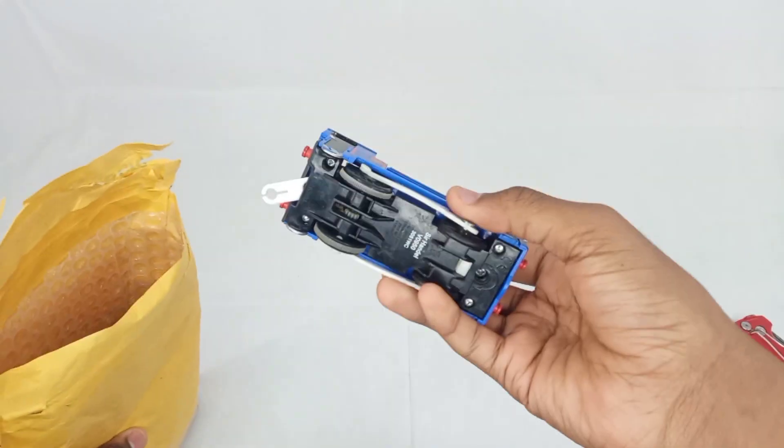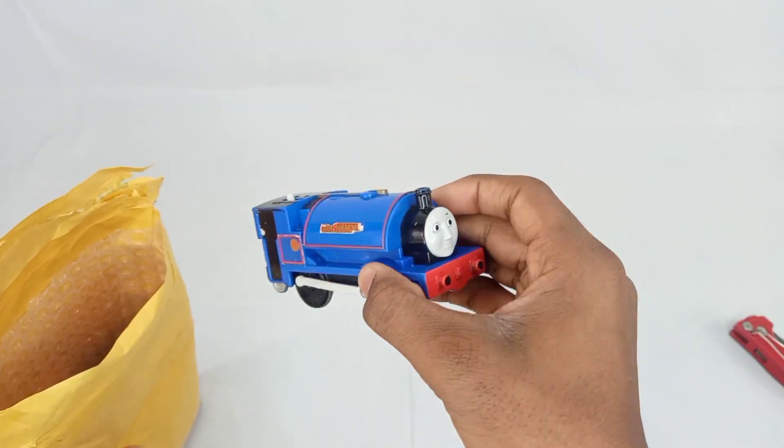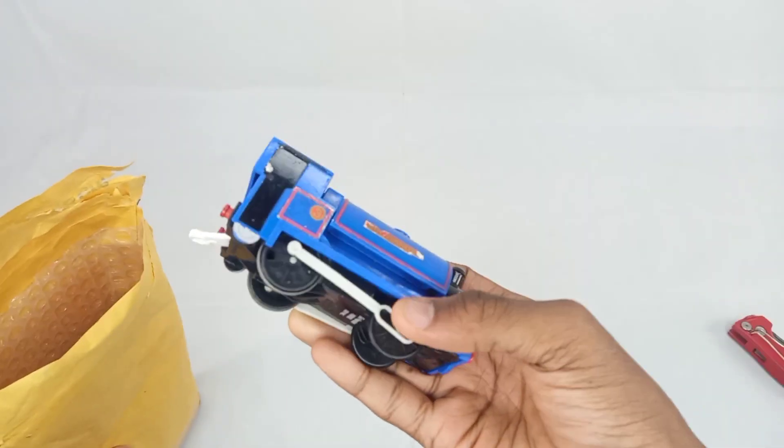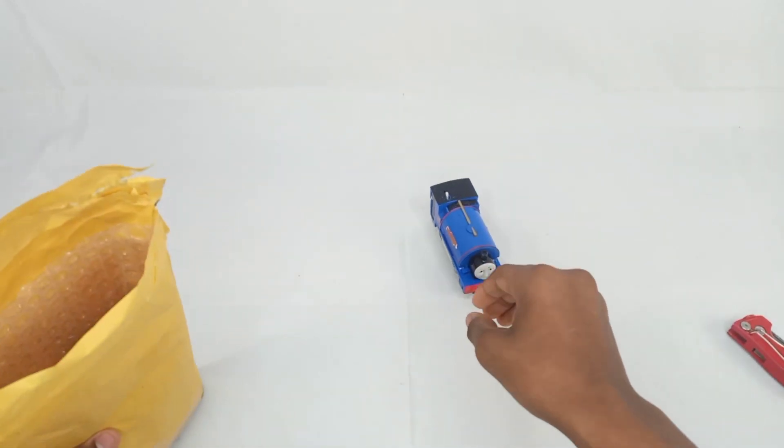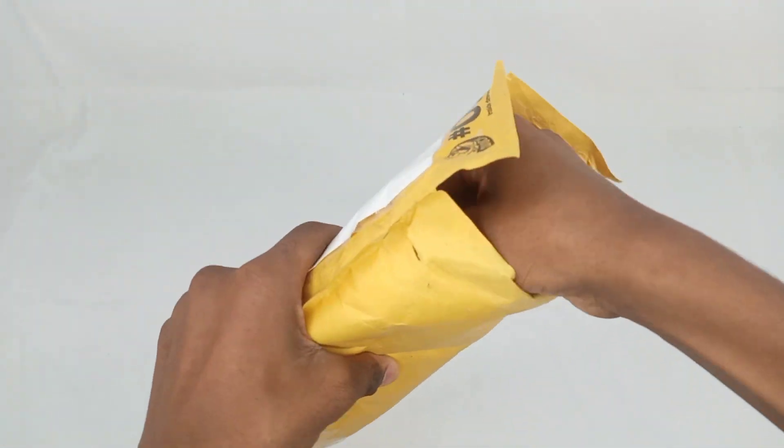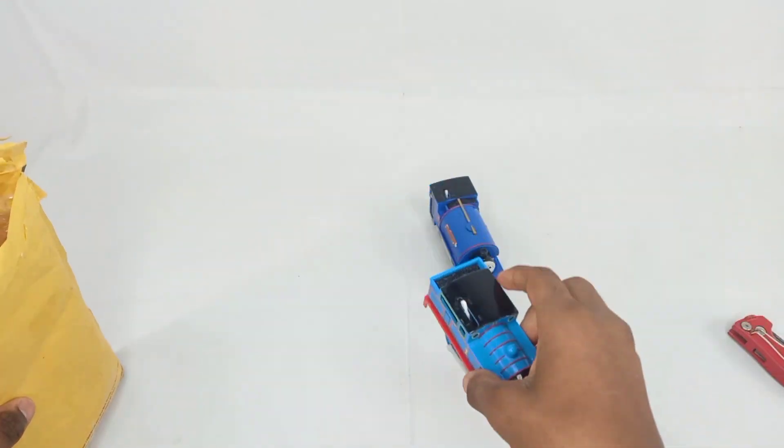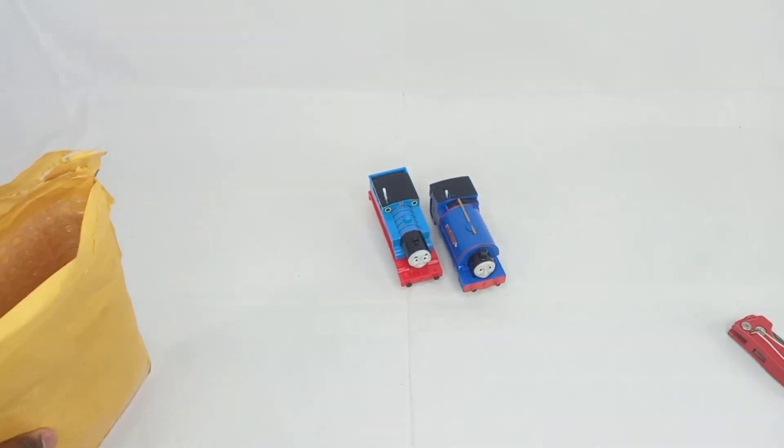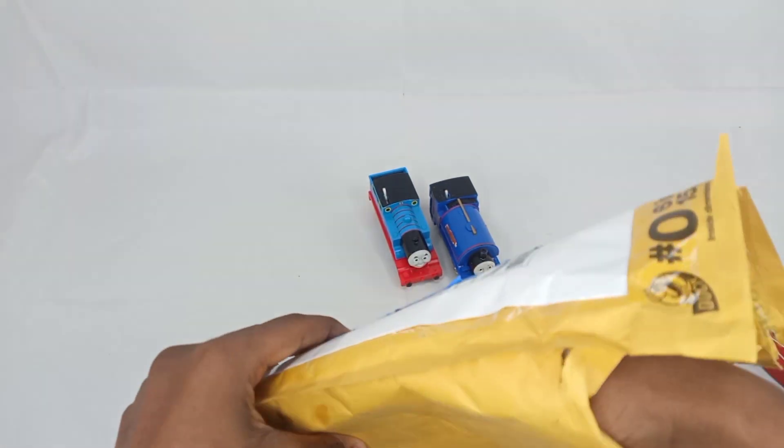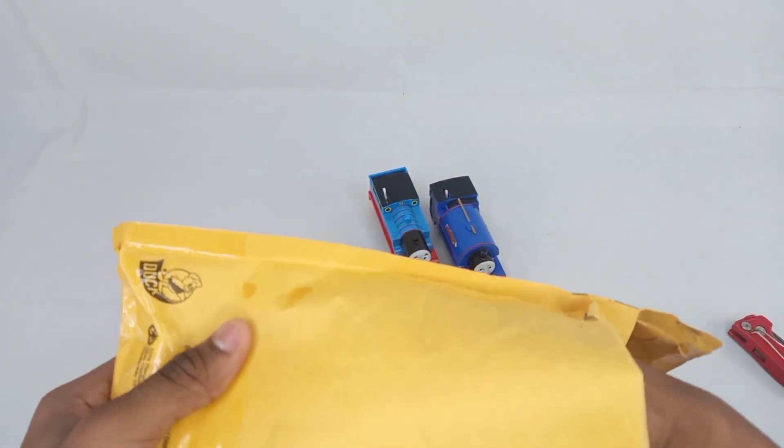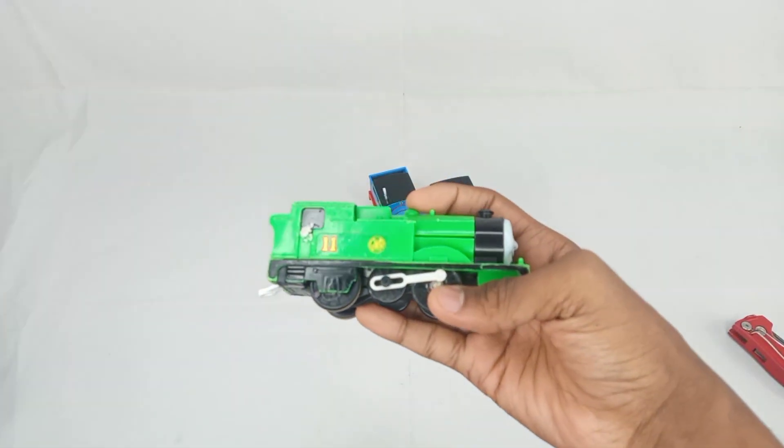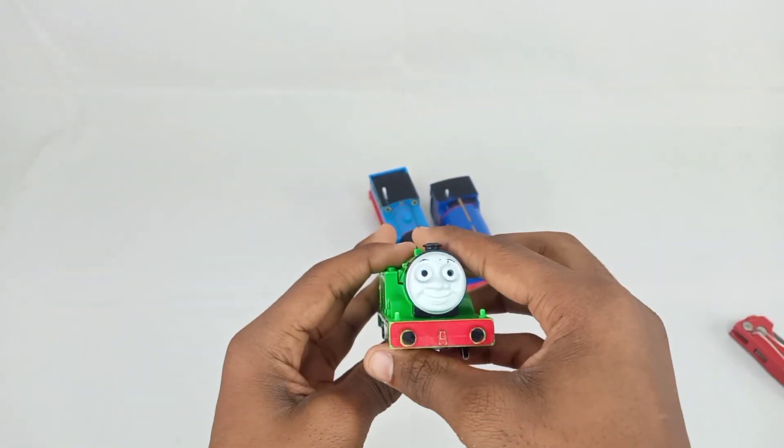First we have Mattel Sir Handel. That's definitely not why I bought this. Next we have Mattel Muddy Thomas. This is also why I didn't buy this. But I bought it for this item that I have never had before. Mattel Oliver.